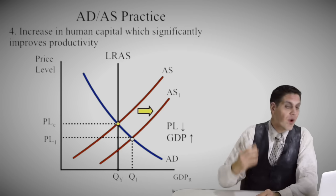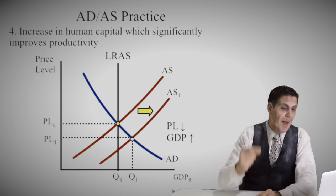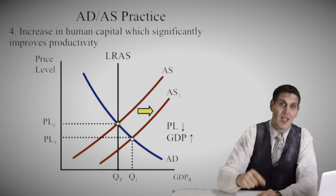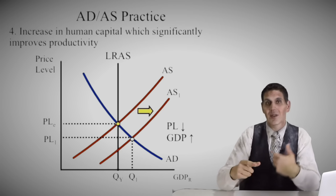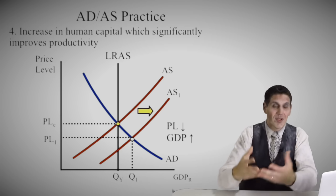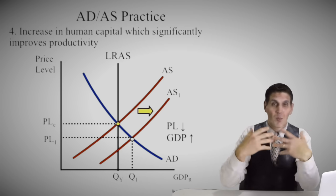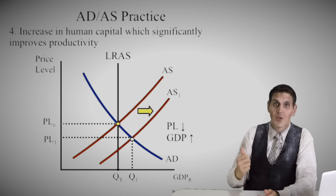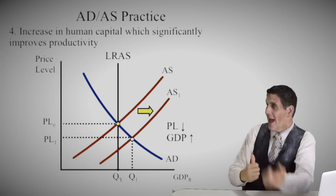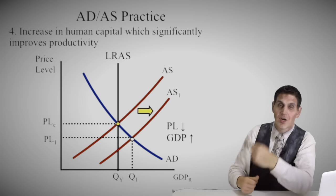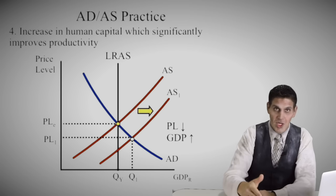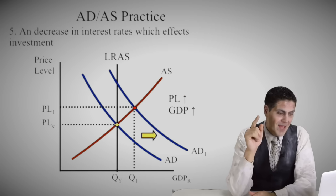Number four: an increase in human capital that significantly increased productivity. Human capital is knowledge and abilities, which means workers are more productive — that's a supply shifter. Supply would shift to the right, so price level goes down and real GDP would go up.